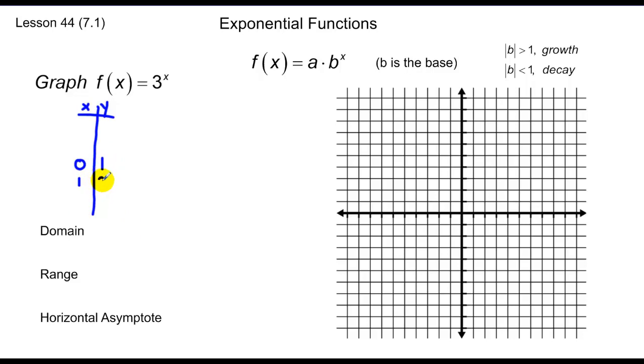3 to the first power is 3. 3 to the second power is 9. What about negatives? 3 to the negative 1 power is 1/3, and 3 to the negative 2 power is 1/9. So I can graph all those points.